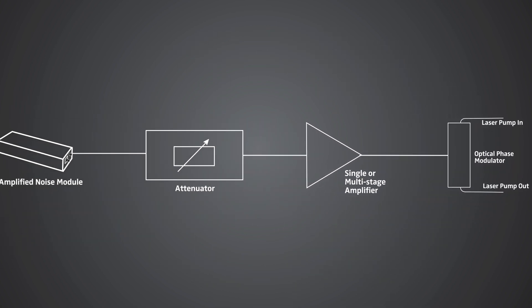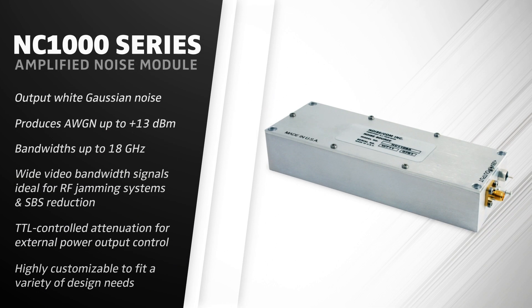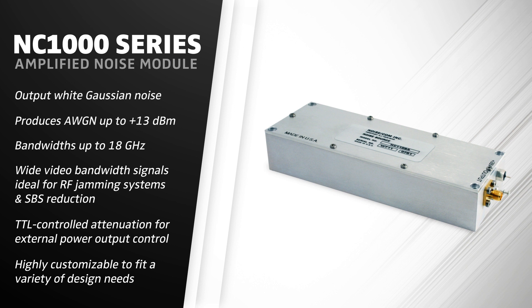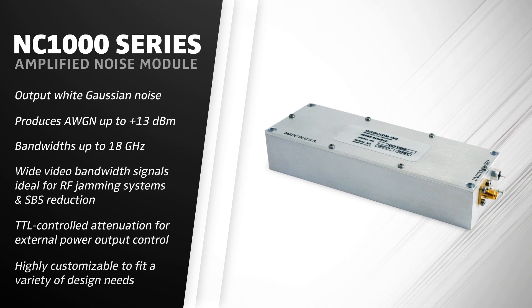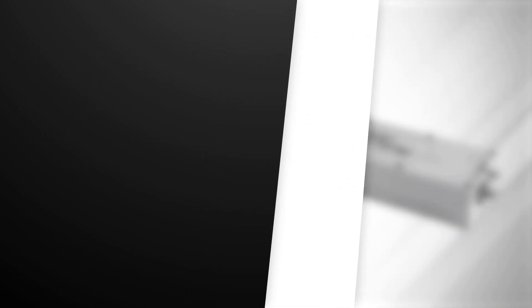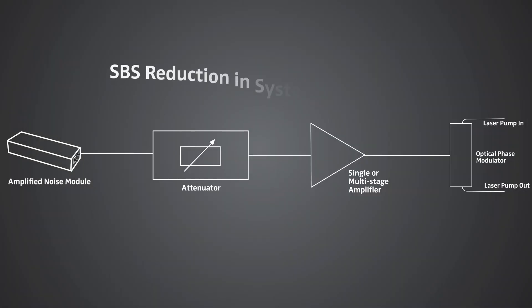The NC-1000 series, in particular, can produce additive white Gaussian noise up to plus 13 dBm, offers bandwidths up to 18 GHz, and features TTL-controlled attenuation for external power output control.